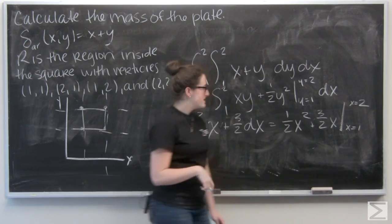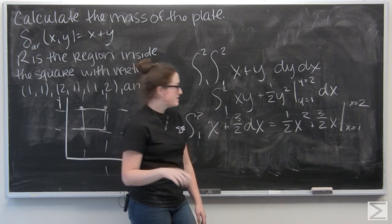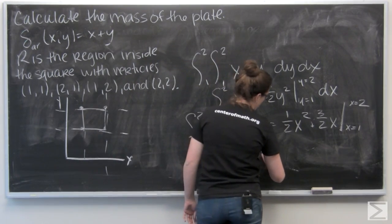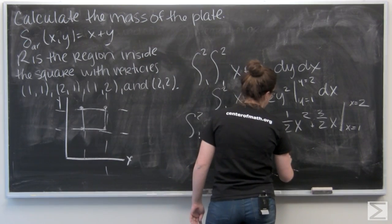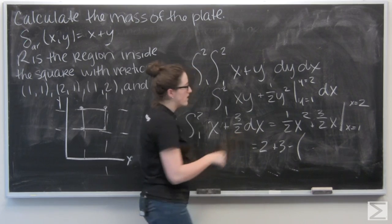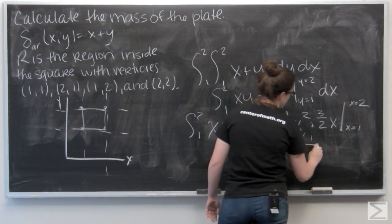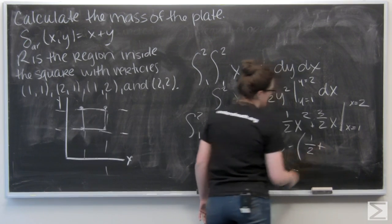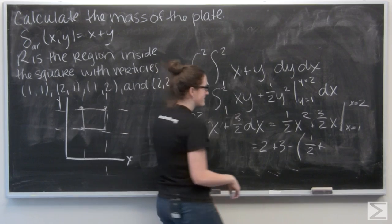Let's start by plugging 2 in. So one-half times 2 squared is going to be 2, and three-halves times 2 is going to be 3. Now 1 times one-half is going to be one-half, then three-halves times 1 is just three-halves.